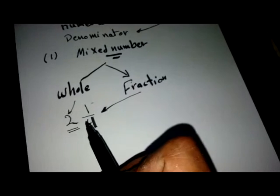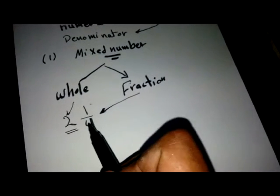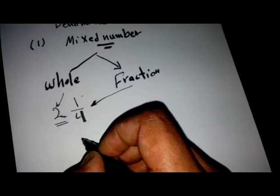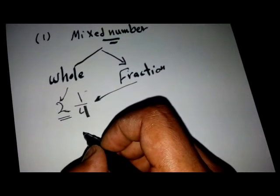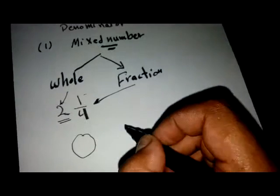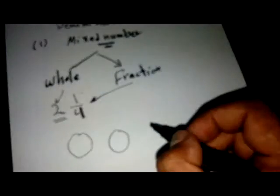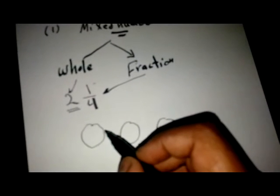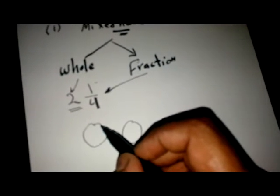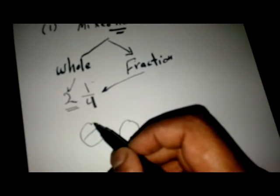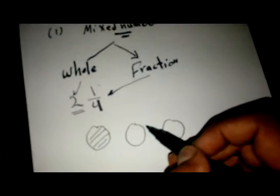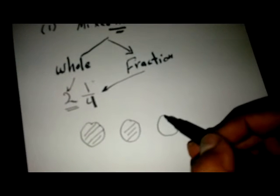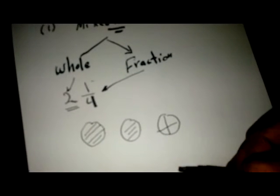If we draw two and one fourth, let's imagine that we have three pieces of pizza. Now I ate the first one and the second one, and divided the third one into four pieces and took this part. So how many parts did I eat?